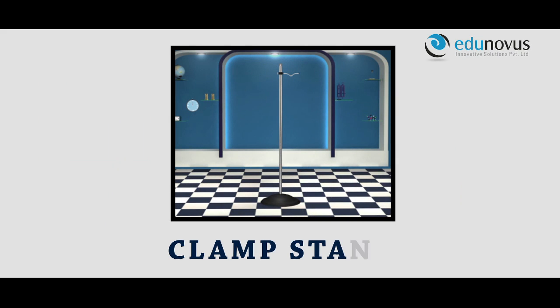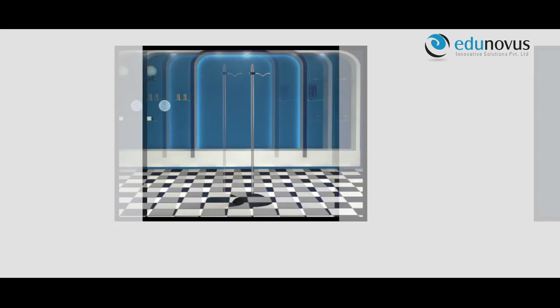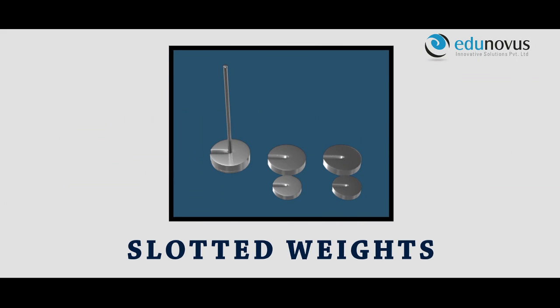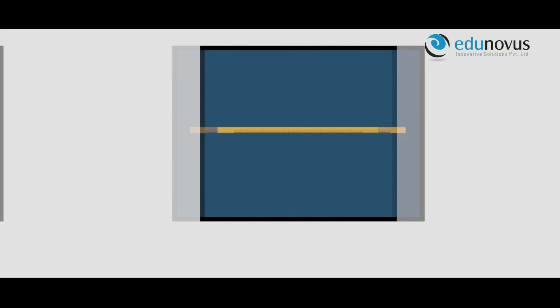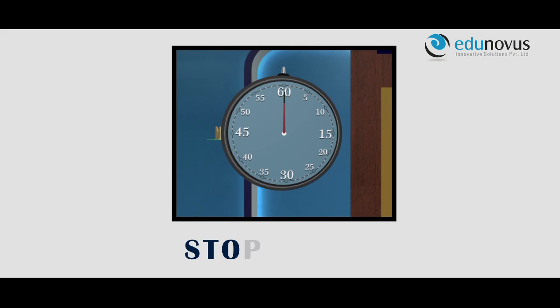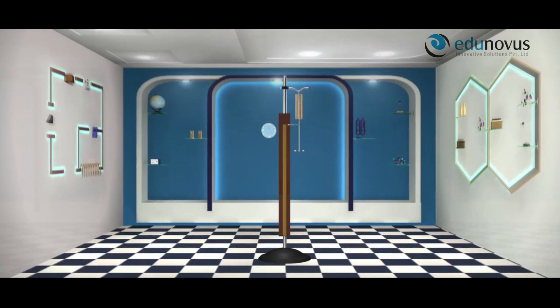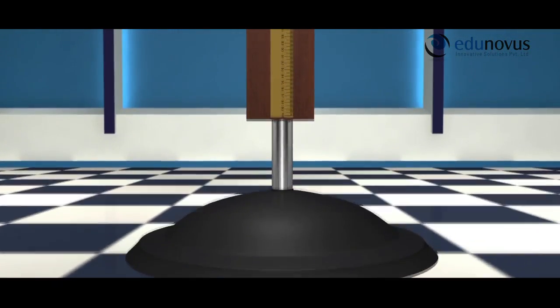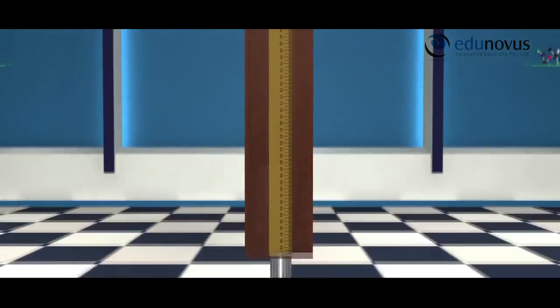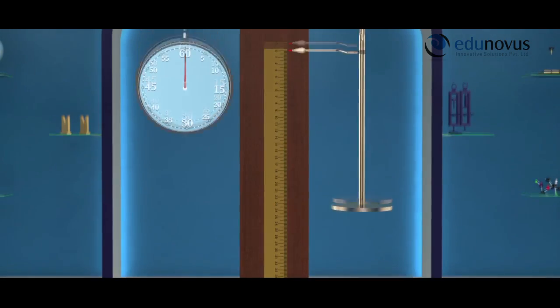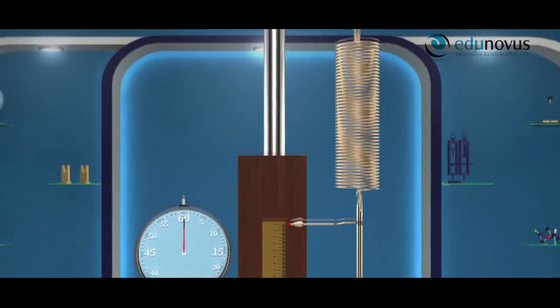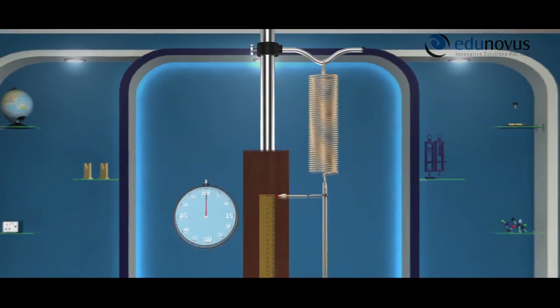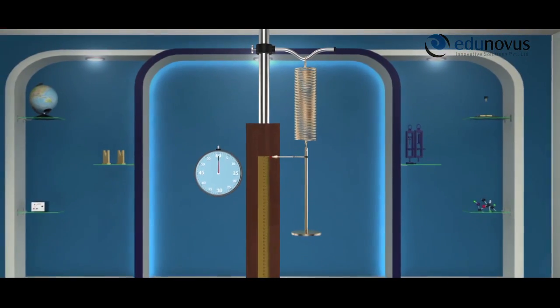Apparatus required: spring, clamp stand, slotted weights, meter scale, and stopwatch. Suspend the helical spring from a rigid support and adjust the scale such that the zero of the scale coincides with the pointer of the spring.